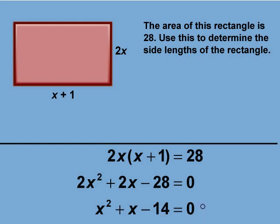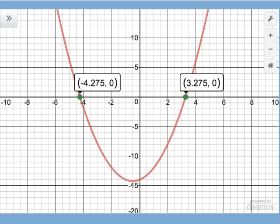Let's graph the left side of this equation as a function. Here is the graph of it. The parabola intersects the x-axis twice at values negative 4.275 and 3.275.